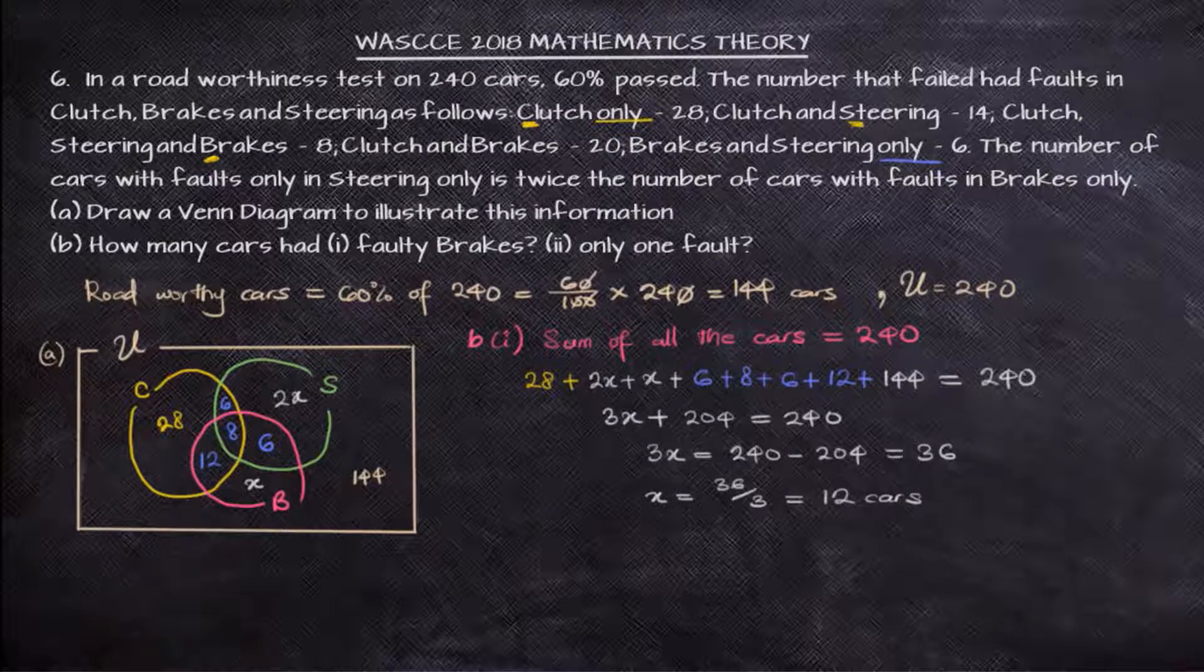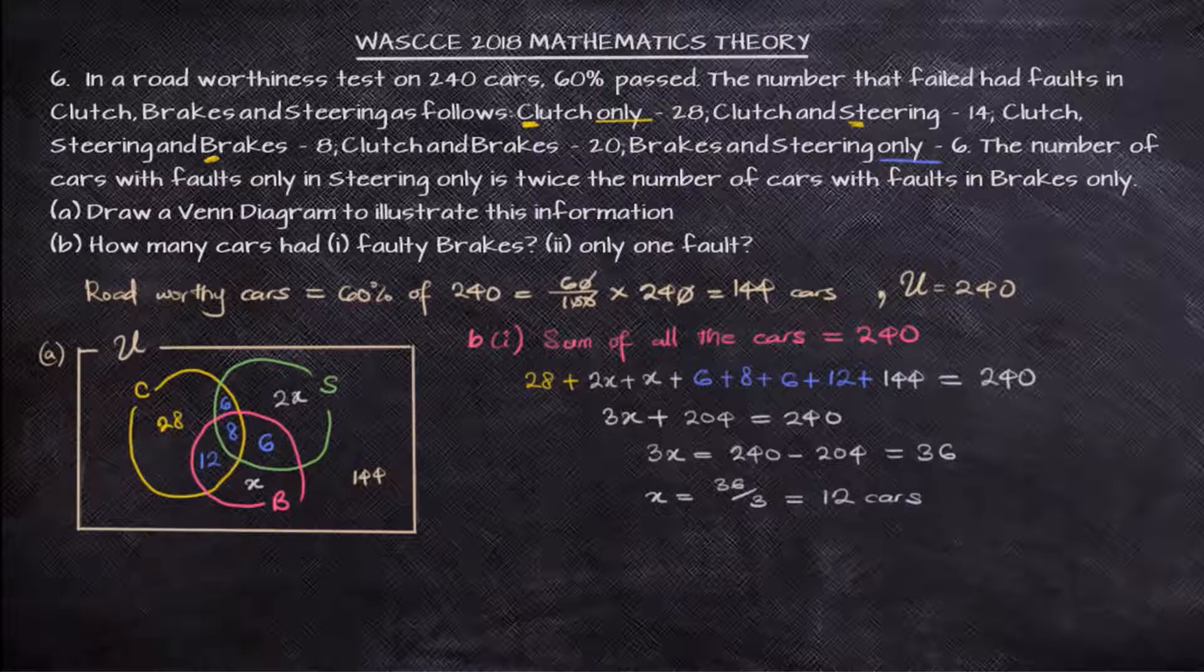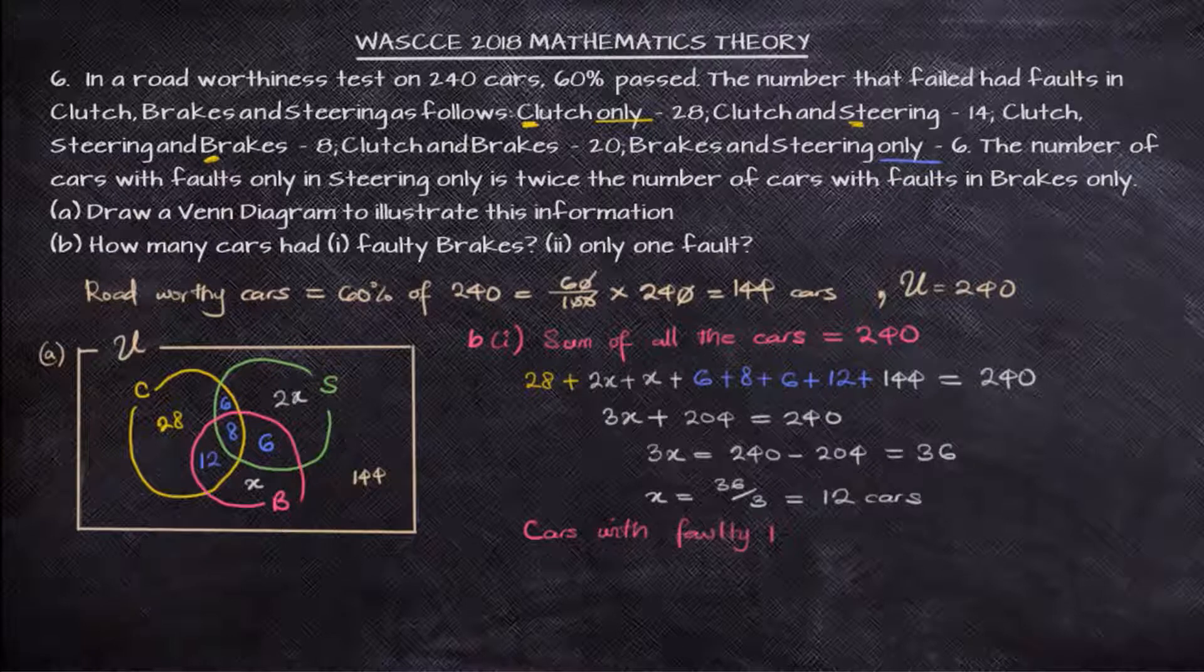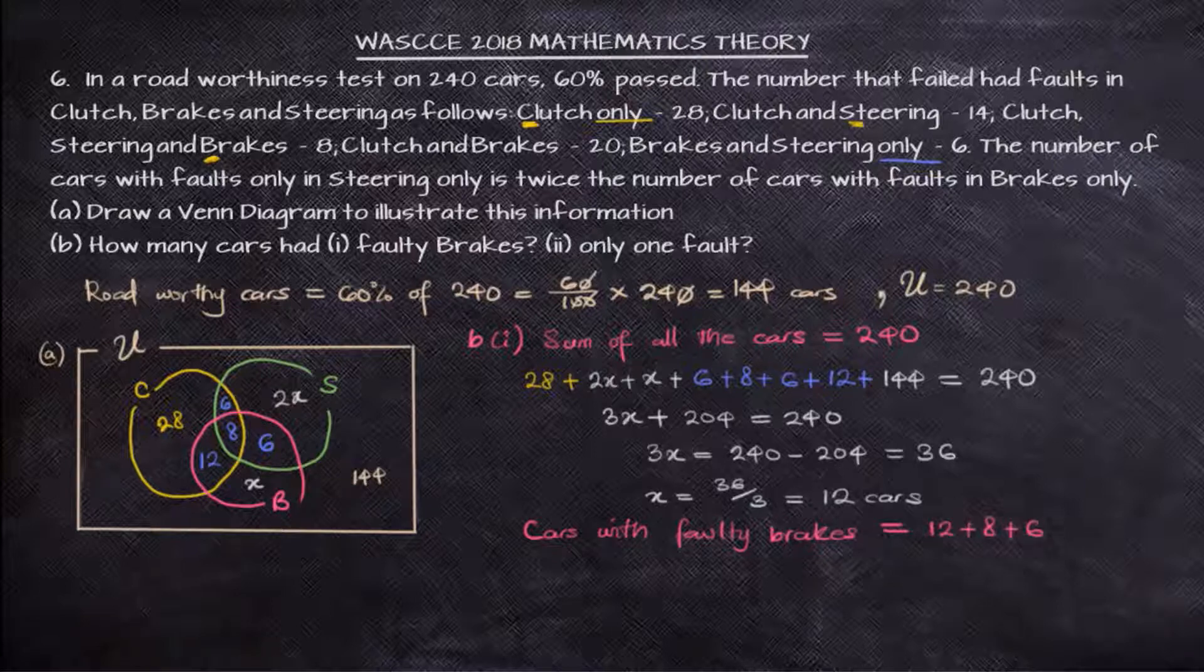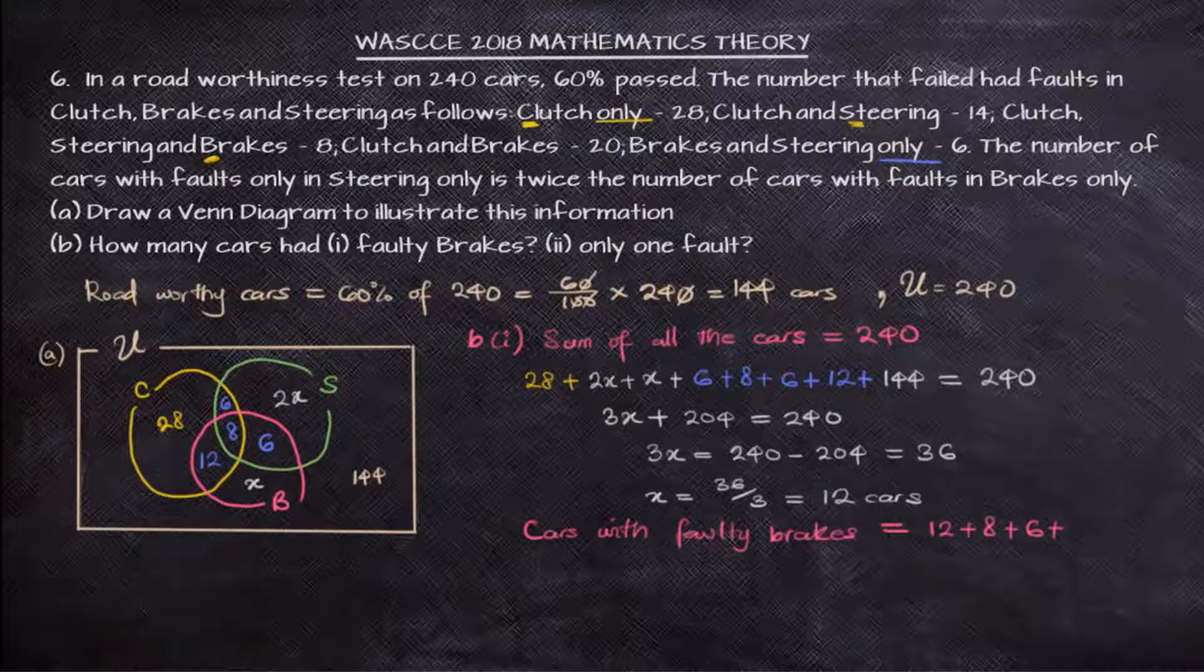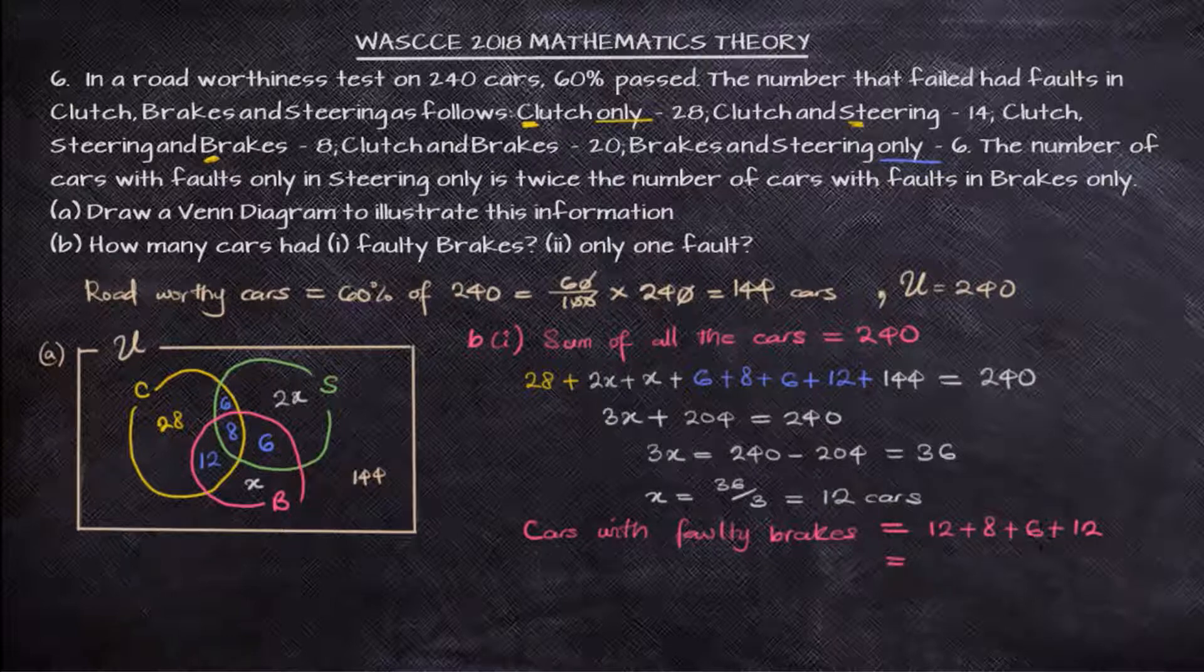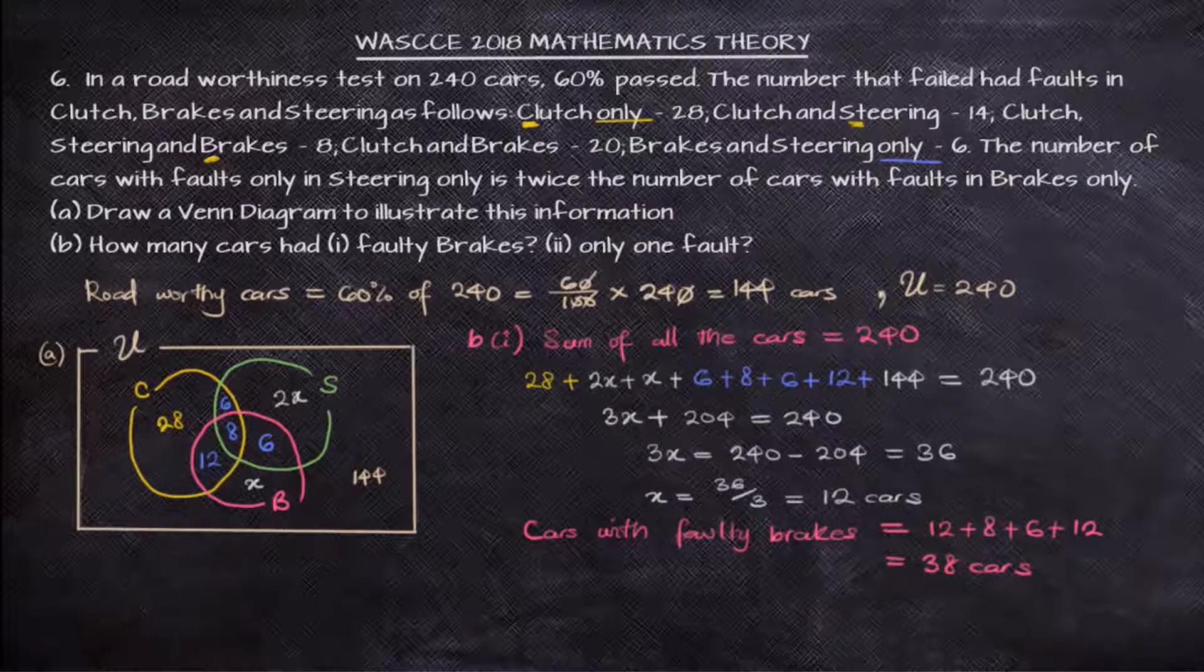Meaning that we have all the information concerning this roadworthiness that was carried out. And we can go ahead to find the number of cars with faulty brakes. Cars with faulty brakes are the ones that are in this pink colored circle. So that will be all the numbers there, 12 plus 8 plus 6 plus x. And our x, we have found that to be 12. So we can put 12 there. And by the time we sum all this, we are going to get 38 cars. So the cars with faulty brakes are 38 in total.